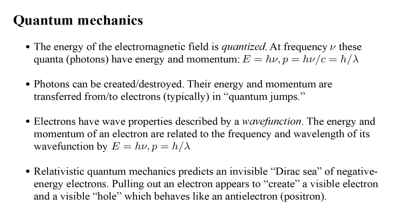Finally, the development of relativistic quantum mechanics predicted that all space is filled with an invisible Dirac sea of negative energy electrons. Pulling out an electron appears to create a visible electron and a visible hole, which behaves like an anti-electron, what came to be called a positron.